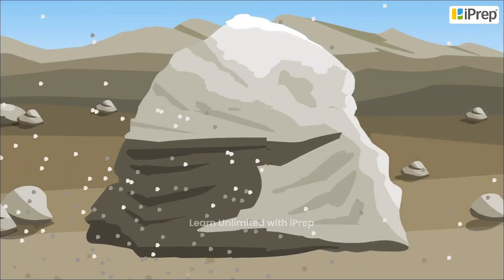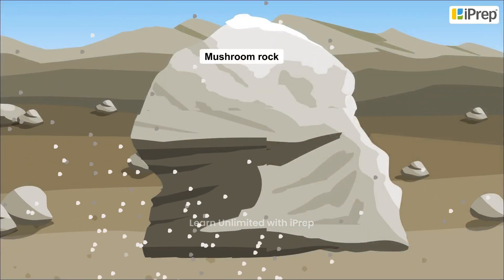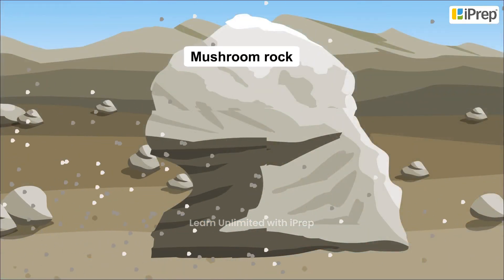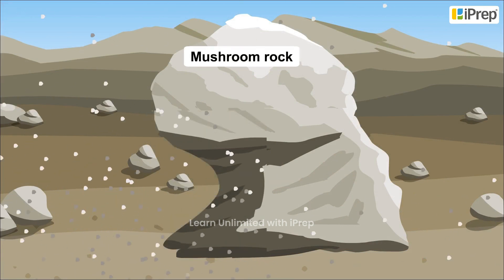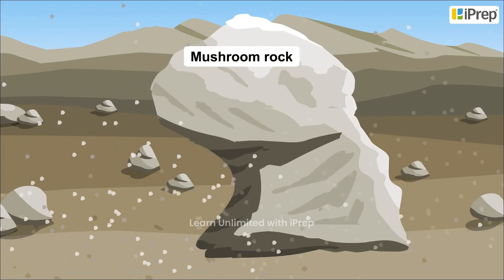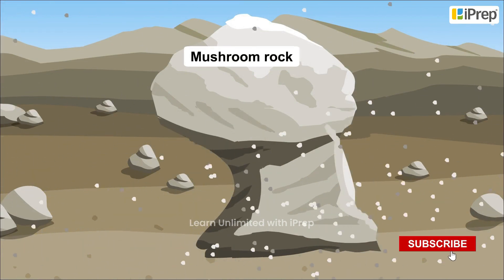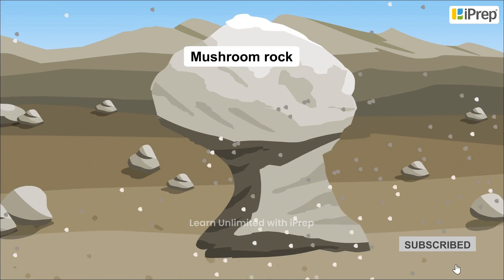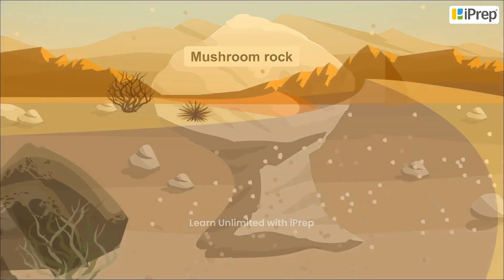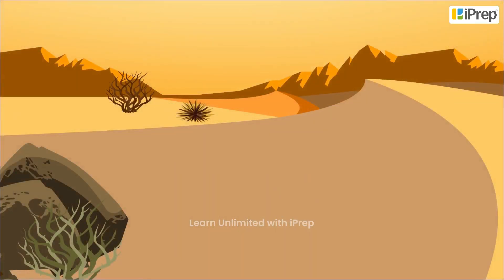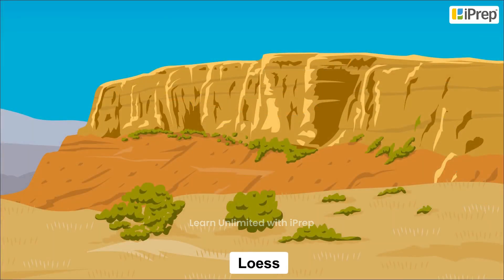For example, the wind erodes the lower portion of mushroom rocks found in deserts. These are shaped like mushrooms, and wind carries the sand and fine material from these rocks to faraway places. When these get deposited, hill-like structures called sand dunes are formed. When the wind deposits sand over large areas, large deposits called loess are formed.